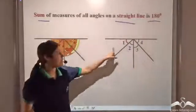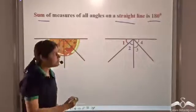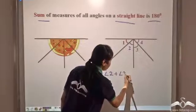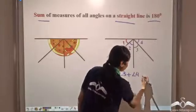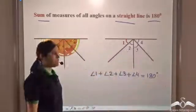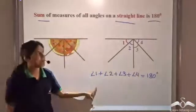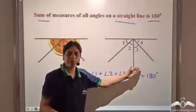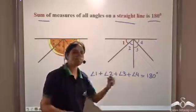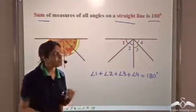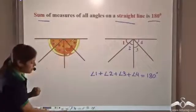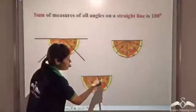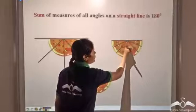In this case, there are four angles being made on a straight line. So, we can say angle one plus angle two plus angle three plus angle four is equal to 180 degrees. The sum of these four angles is equal to 180 degrees. Even if you have more or fewer angles, the sum will remain 180 degrees. Even if you cut this pizza into more or fewer slices, the sum of the angles formed will always be 180 degrees.